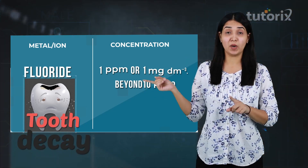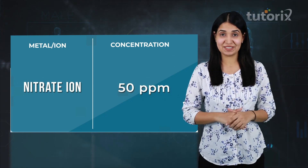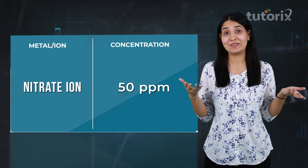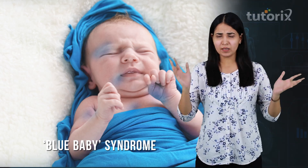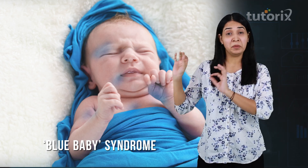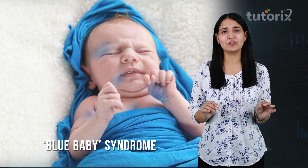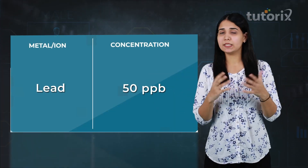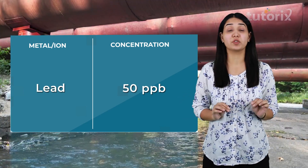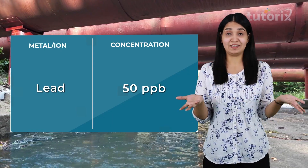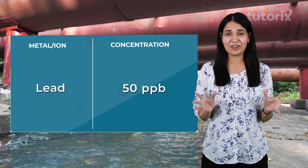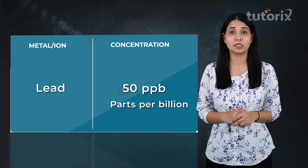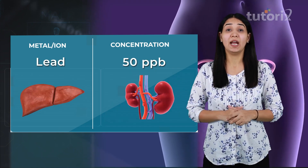Now let's take a look at the next one — the nitrate ion. The maximum concentration suitable in water is 50 ppm. If it goes beyond that, it can lead to a disease known as blue baby syndrome. It is extremely important for us to know the causes and the reasons. Now let's talk about lead. It can reach humans because many times lead pipes are used for transportation of water, and leaching of the metal can happen and get mixed into water. The concentration limit set for lead is 50 ppb — parts per billion. If it goes beyond that, it will be extremely harmful, causing damage to the liver, kidneys, and even the reproductive system.